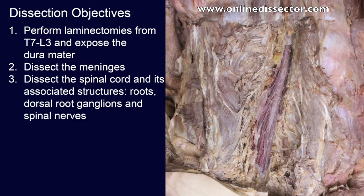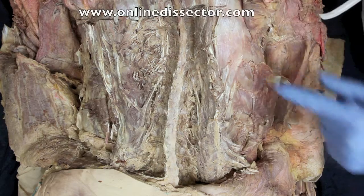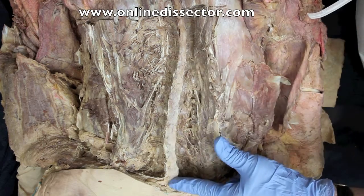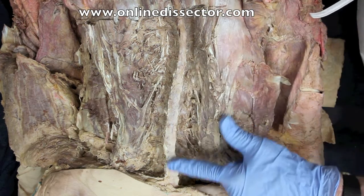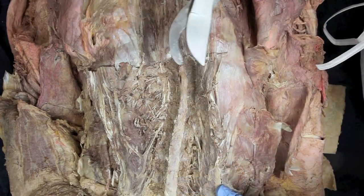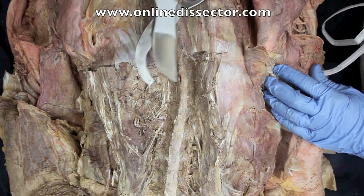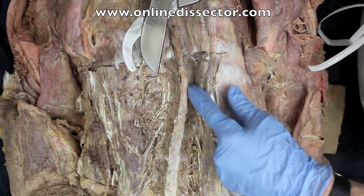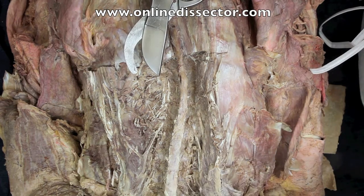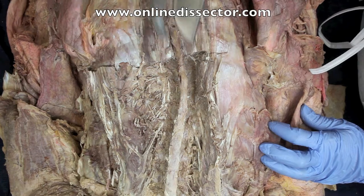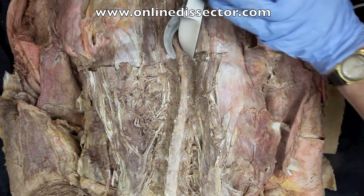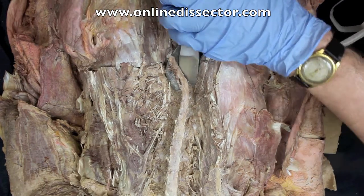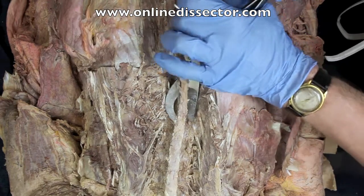Let's begin. We have removed the erector spinae and now cleaned up the spinous processes of the thoracic and lumbar vertebrae. The next objective is to cut off the spinous processes with bone shears, which will allow me to use my saw to then do laminectomies on the lamina of the vertebrae. I will remove the spinous processes now, and this takes considerable force sometimes, even with these nice bone shears.